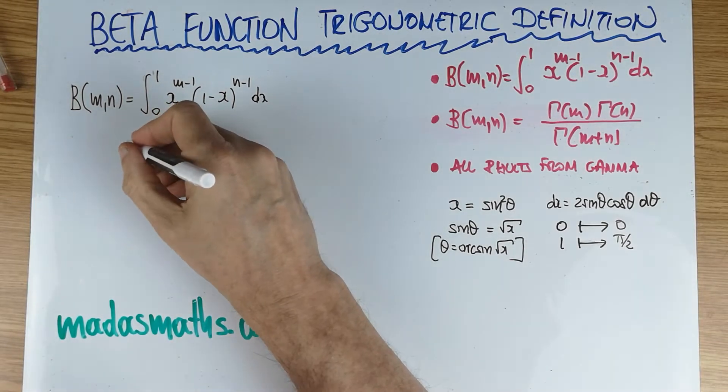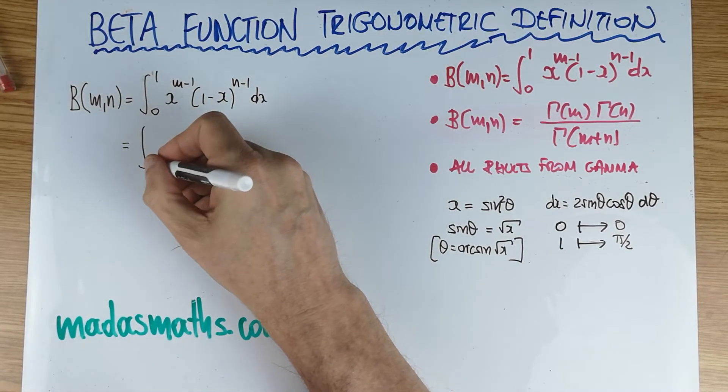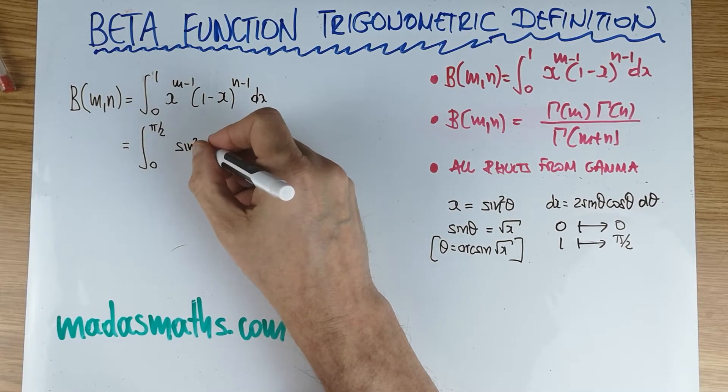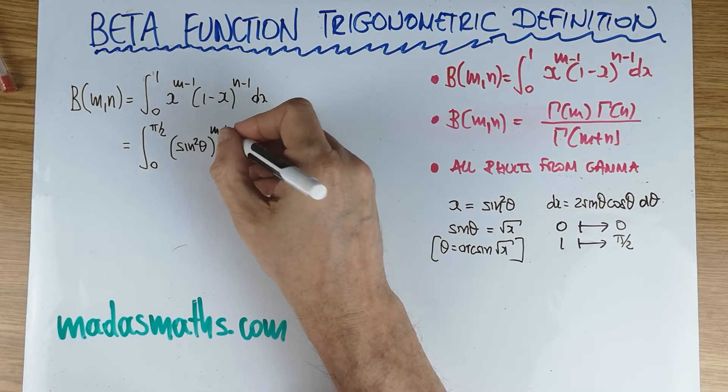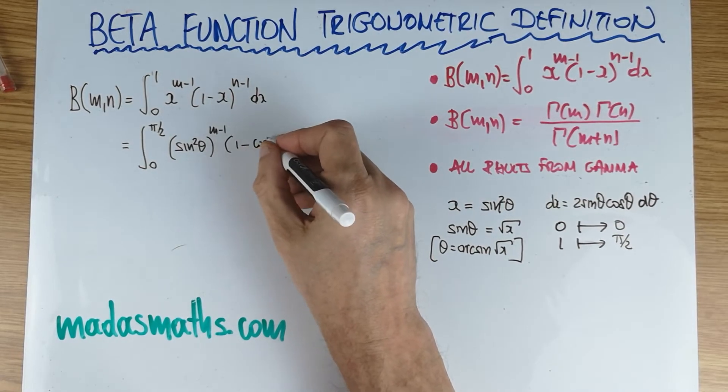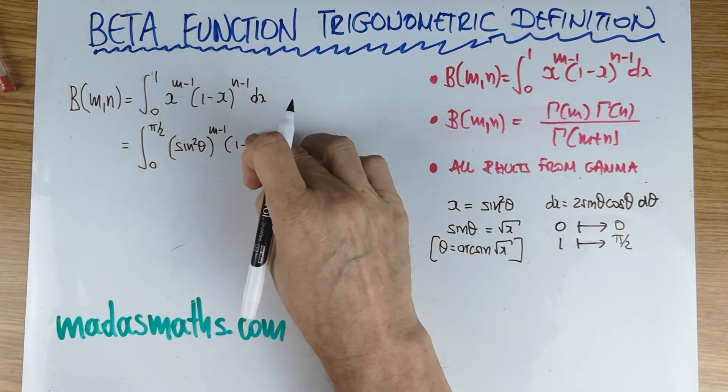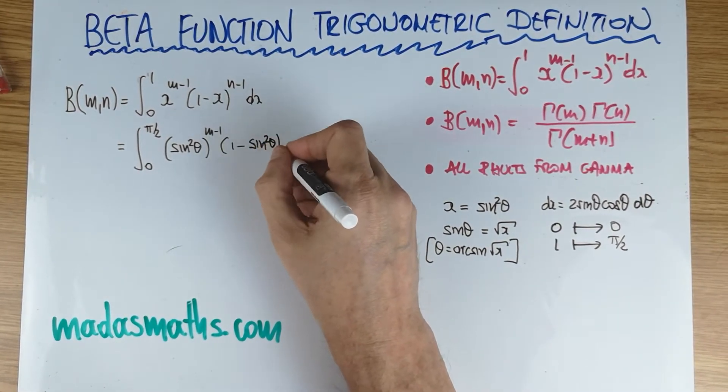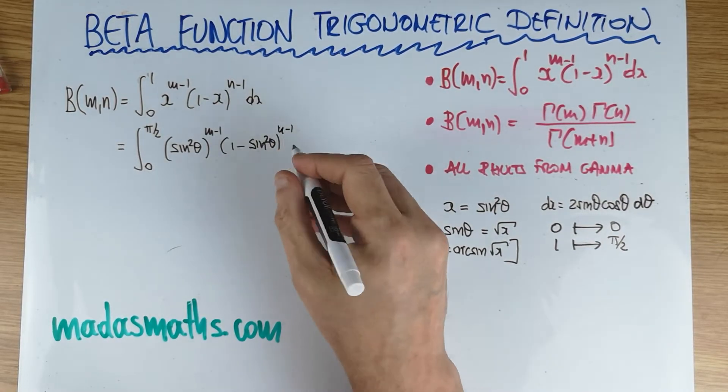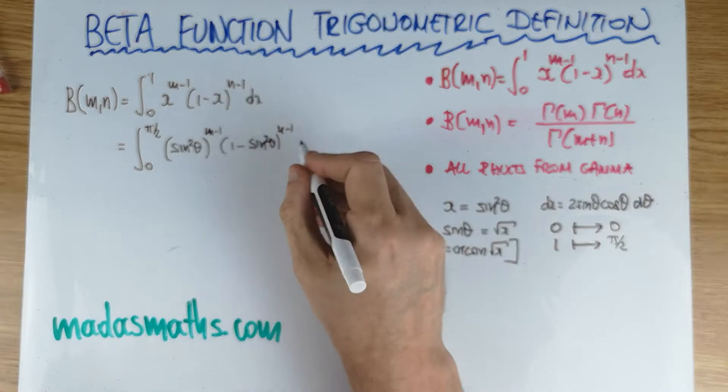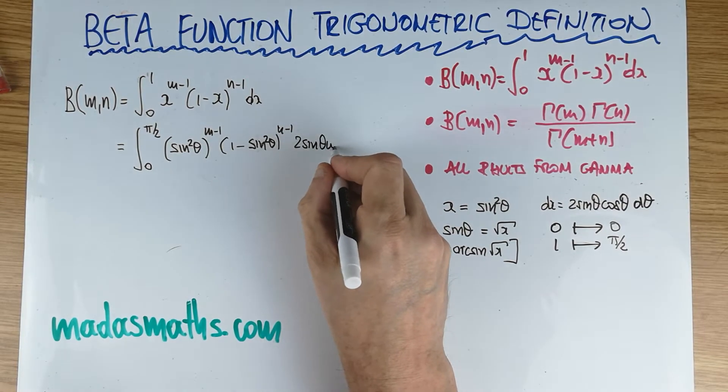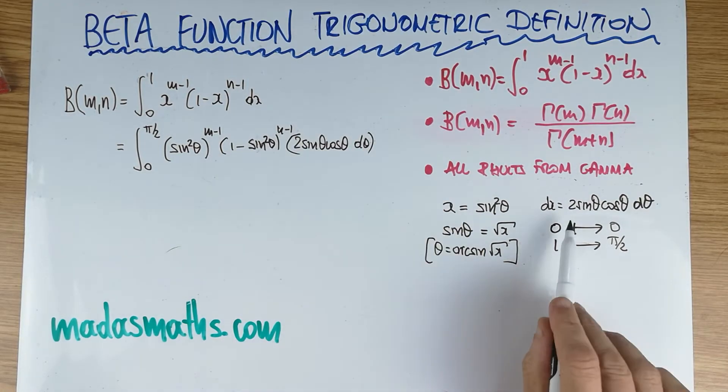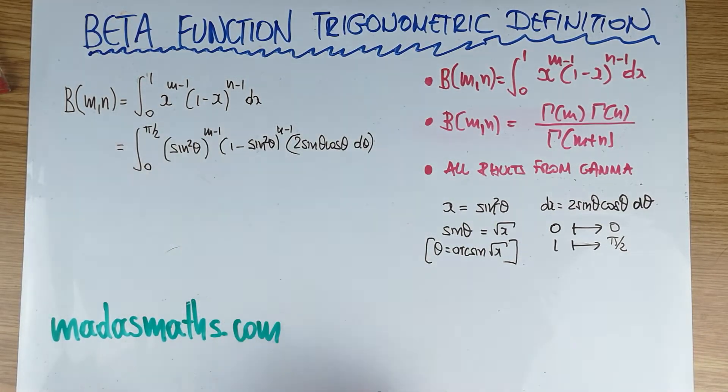Once we put these bits in, let's see what happens. 0 to pi over 2. This is now sine squared of theta to the m minus 1. And that's 1 minus, which is cosine squared, to the n minus 1. And then we have 2 sine theta cos theta d theta. That's my dx there with the correct quantities.